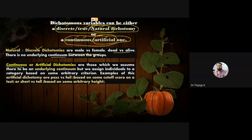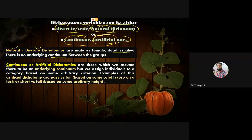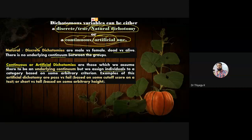There is a score — a continuous variable — for example students may score from 30 to 100. We are dividing that continuous scale into a discrete or categorical manner with two classifications: pass or fail. For an artificial dichotomy there is an underlying continuum, but we assign individuals to a category based on some arbitrary criterion — for example pass or fail.